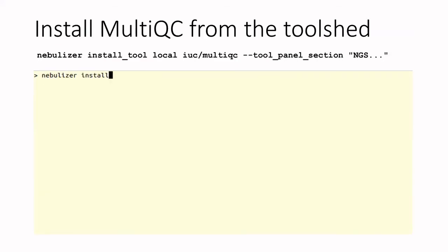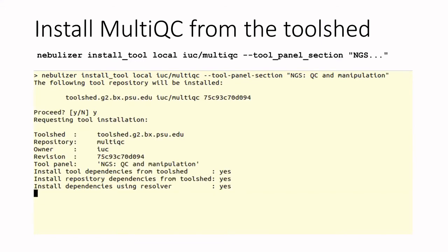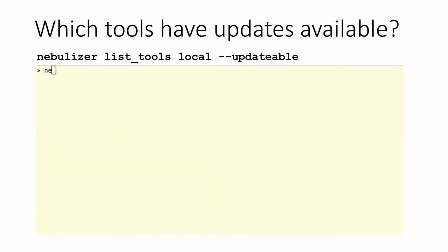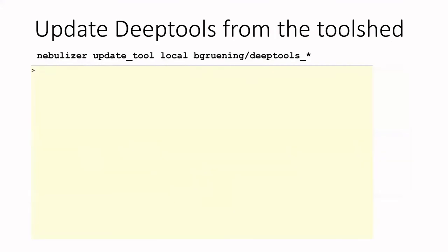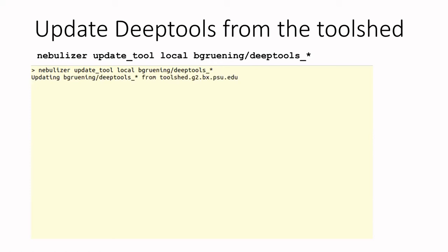You can install tools — for example, MultiQC from the Tool Shed — quite easily by using the install tool command and then targeting a particular tool panel section to put that tool into. You can find out which tools on a particular instance have updates available in the Tool Shed by using the updateable option of the list tools command. And you can easily update one or more tools from the Tool Shed using the update tool command, which will pull in the latest versions of any that need updates.